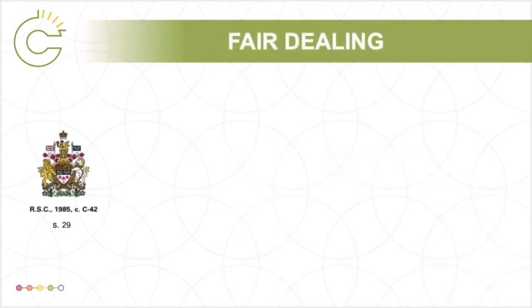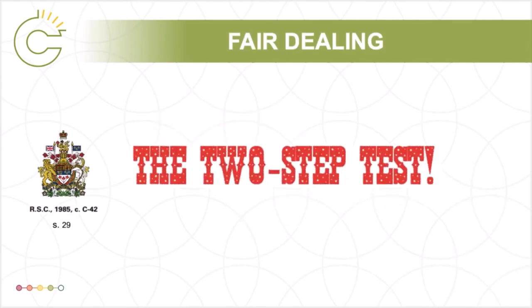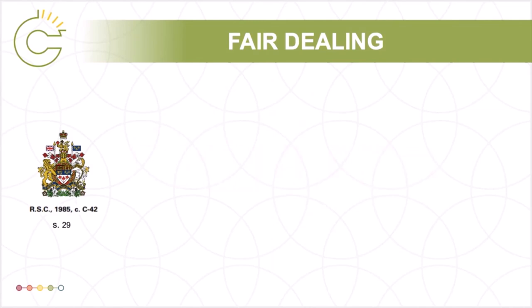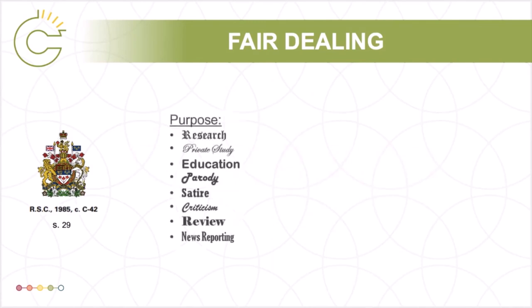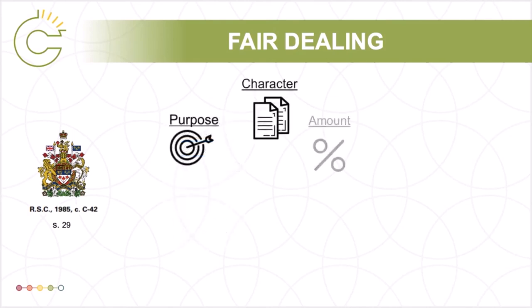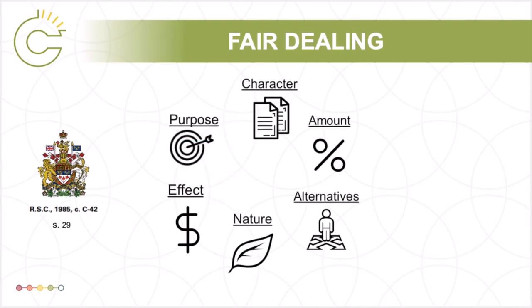Fair dealing is outlined in Section 29 of the Copyright Act and involves a two-step test for determining whether a particular use of a copyrighted material is fair. The first step is assessing the purpose of the use. The list of acceptable purposes includes education, as well as research and private study. However, just meeting one of the purposes in the first step doesn't mean that the use is fair. It depends on the outcome of the second step, the six-factor test. The second step involves assessing six key factors for determining whether the use of a work can be reasonably considered fair.